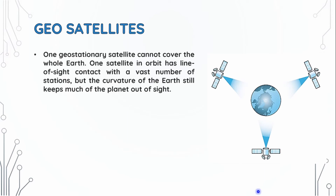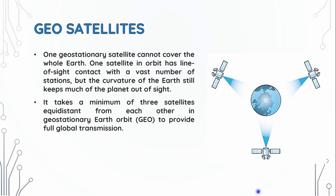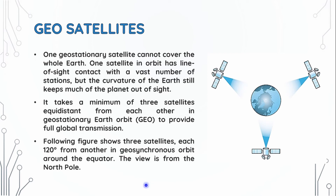One geostationary satellite cannot cover the whole globe. The following figure shows three satellites, each 120 degrees from another in geosynchronous orbit around the equator. The view is from the north pole.